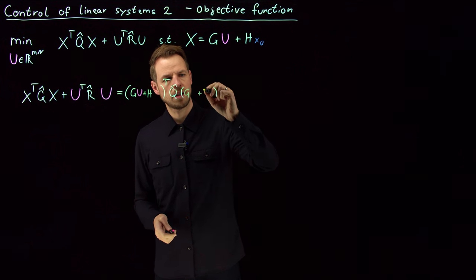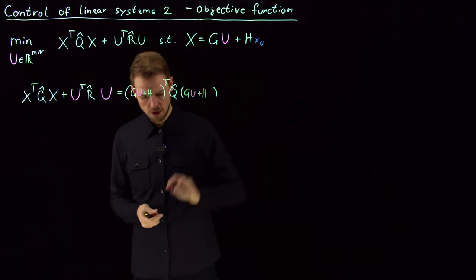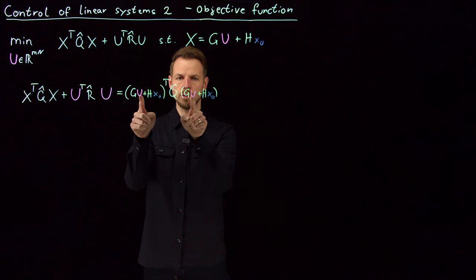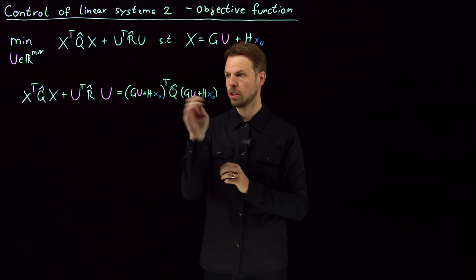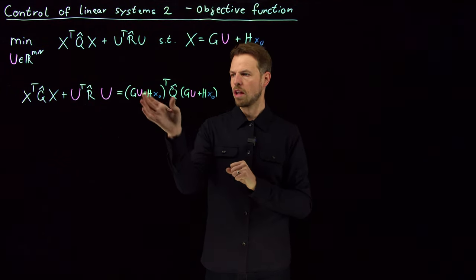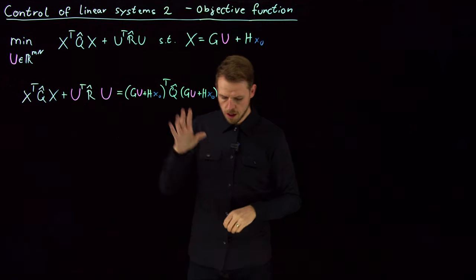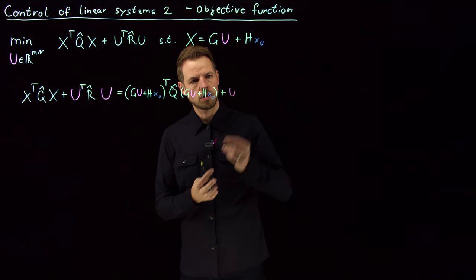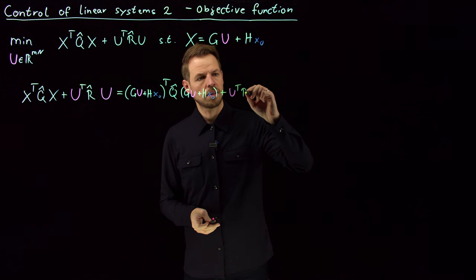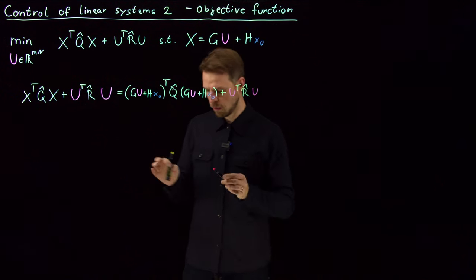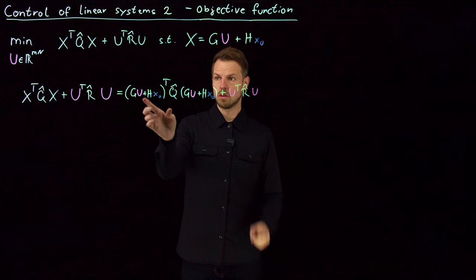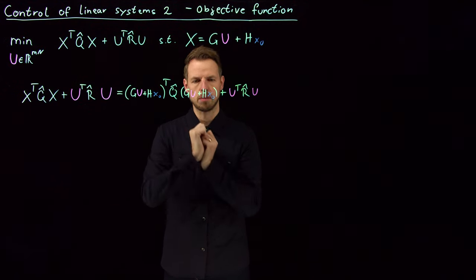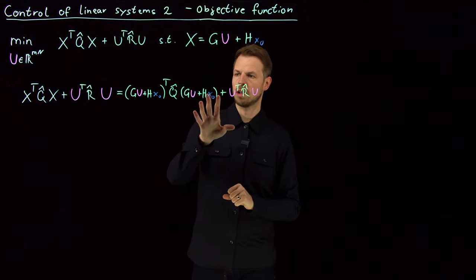And the same here, G times U plus H times x0. So this is U and this is x0. So what you're going to see is, due to this color code, hopefully what we're optimizing over U and x0 will be a parameter on which the solution depends. Obviously where we place the starting point should have an impact on how to control or pick the control input. What's still missing is the second part, which is plus U transpose R hat times U. So we have this large matrix equation and I can simply now summarize everything where U pops up in a quadratic form.